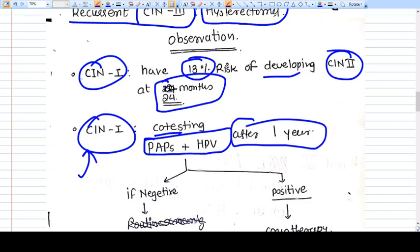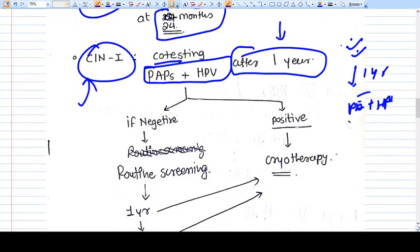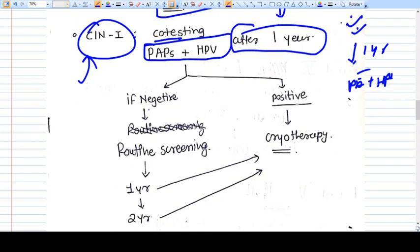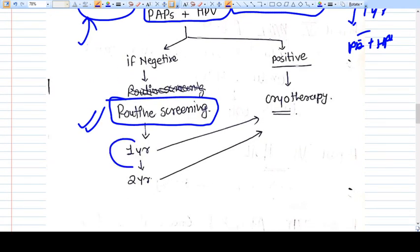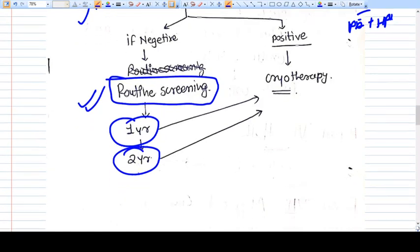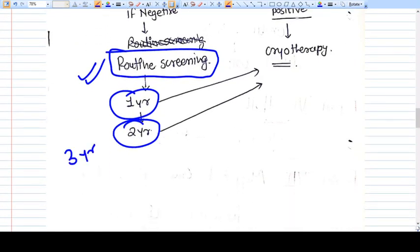After one year of giving the treatment, we diagnose the CIN, then after one year what you need to do is Pap smear plus HPV. If it comes negative, then routine screening is established. What is routine screening? By one year, then by two years, and then comes to every three years.